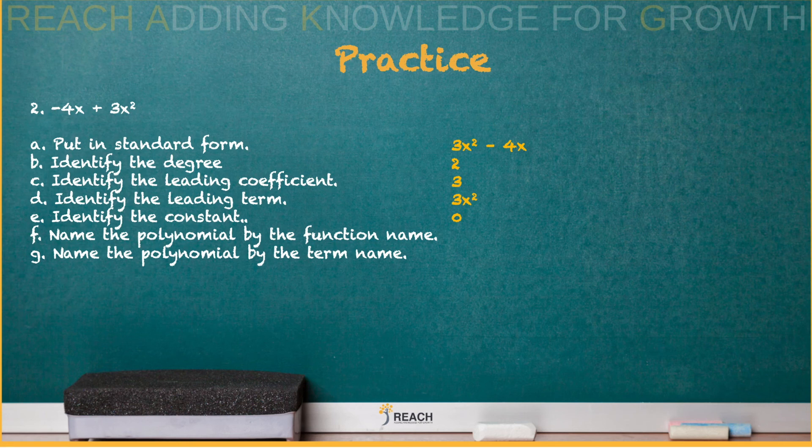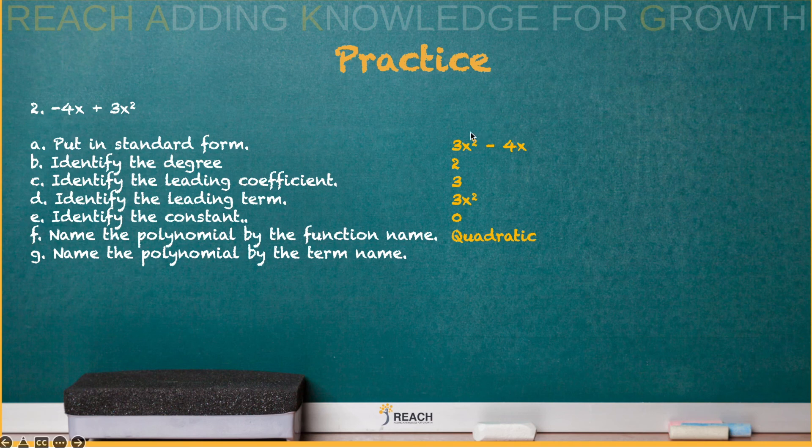Either one of those is acceptable. Name the polynomial by the function name. So what is X to the second called? That's the name of the function, or we might say degree name as well. That's quadratic. How many terms? Two terms. Uno dos, which is binomial.